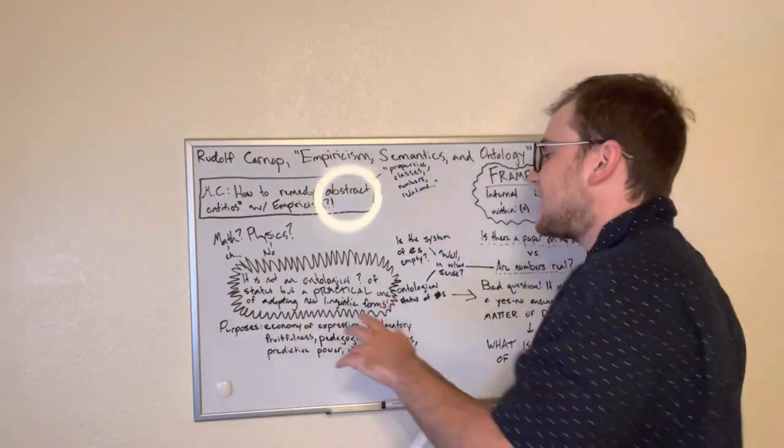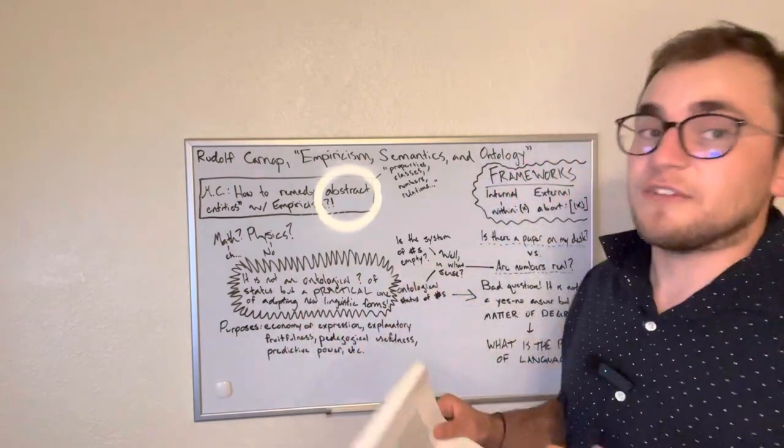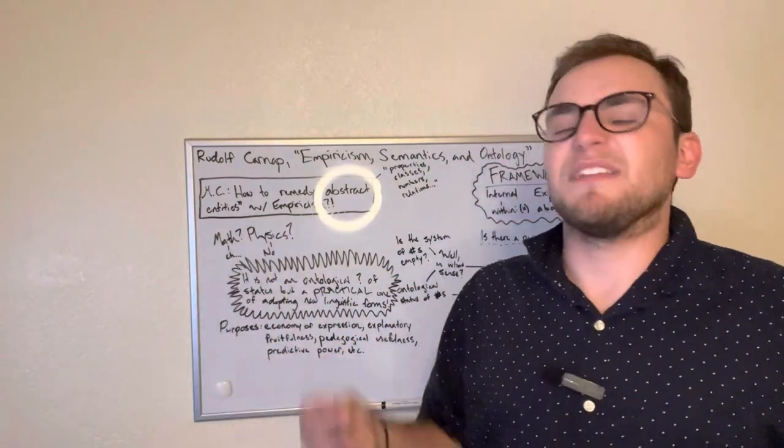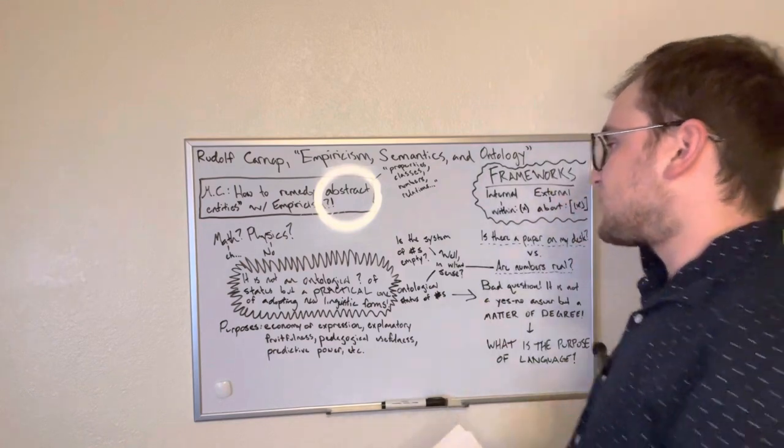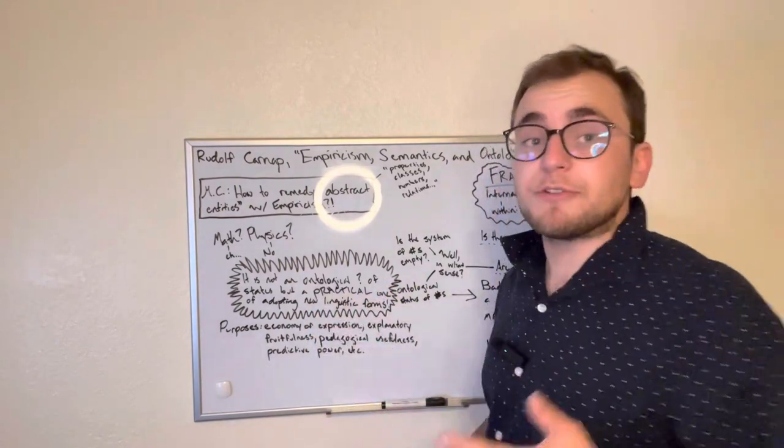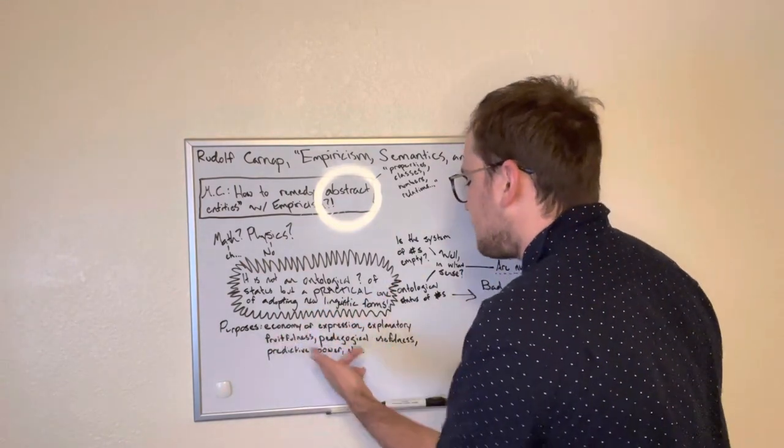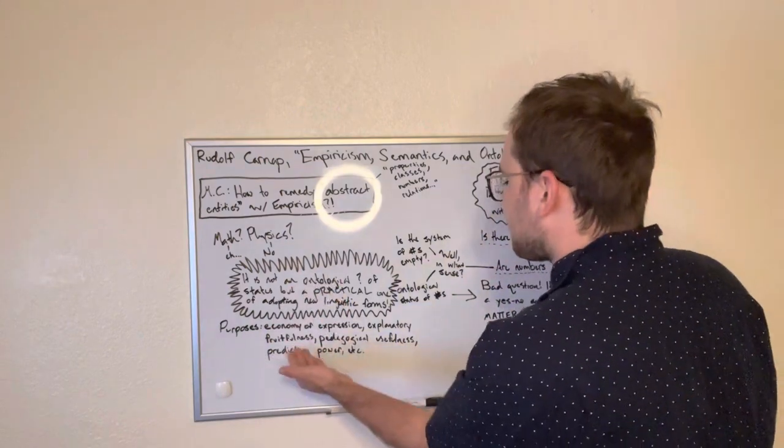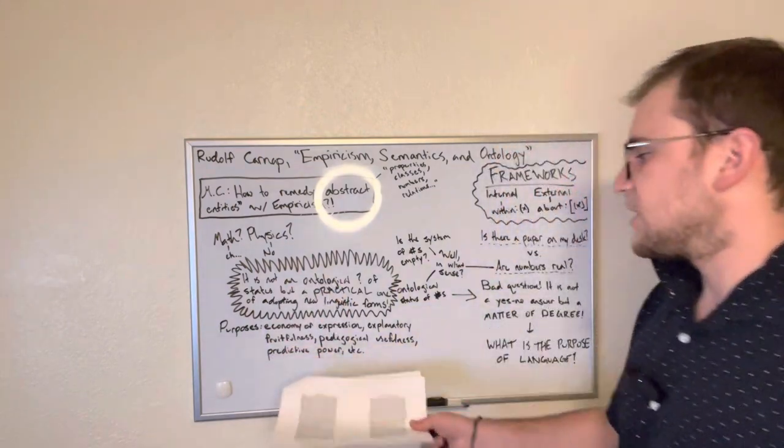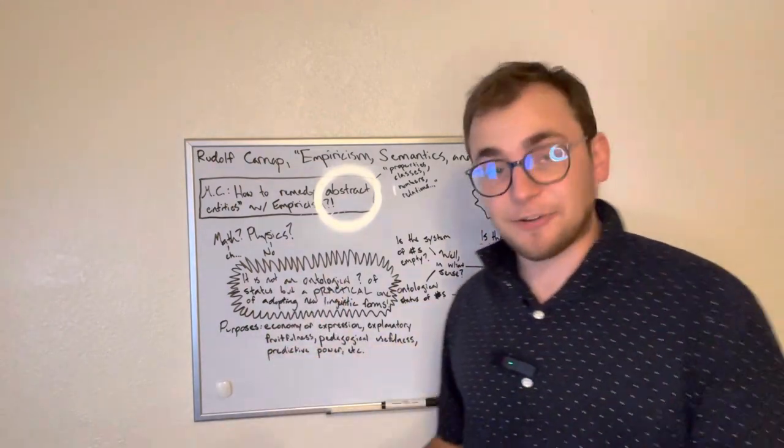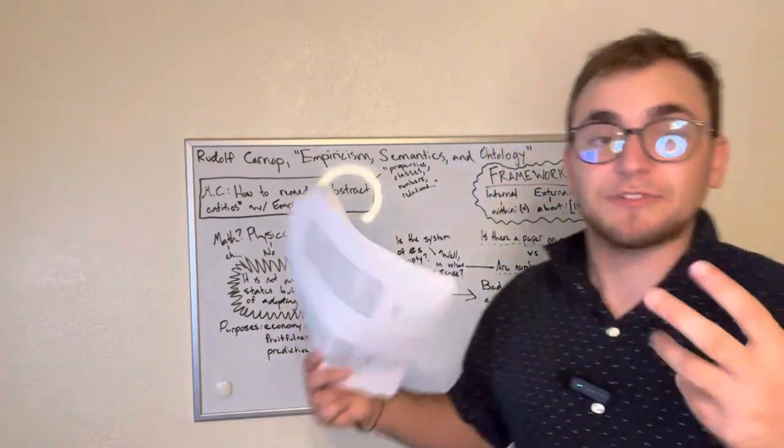Now, that's a little complicated. So what we're trying to get is, it's not an ontological question. It's not a question of are numbers real in some metaphysical sort of sense. It's rather a practical one of whether or not it provides something like economy of expression, explanatory fruitfulness, pedagogical usefulness, predictive power, etc. These are all ways that my professor, Professor Dr. Bauer, put it.